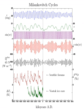The major component of these variations occurs with a period of 413,000 years. Other components have 95,000-year and 125,000-year cycles, with a beat period of 400,000 years.